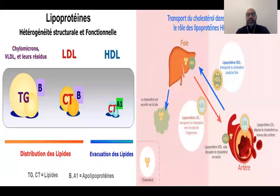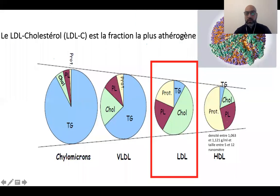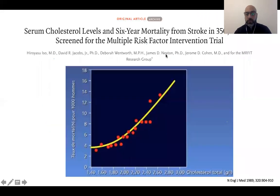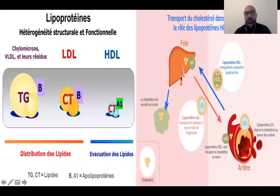Du foie vers la périphérie, le cholestérol va être transféré surtout par les lipoprotéines qui ont une APO-B — c'est-à-dire les VLDL, les LDL et les remnants de chylomicrons. Ces lipoprotéines APO-B vont faire circuler le cholestérol vers les artères. Ce qui ramène le cholestérol des artères vers le foie, seul organe capable de le cataboliser — via les estères biliaires ou directement dans l'intestin — ce sont les lipoprotéines HDL qui ont une APO-A.